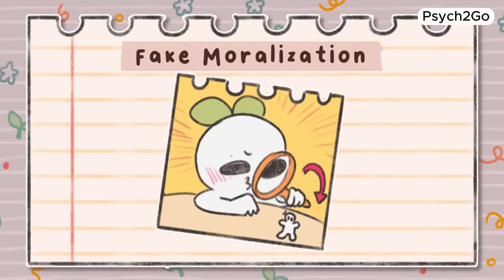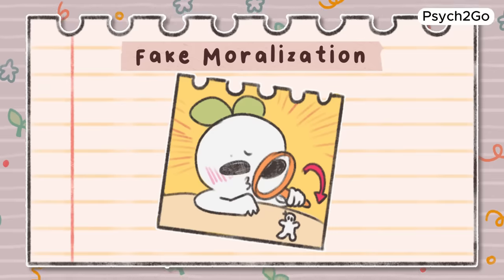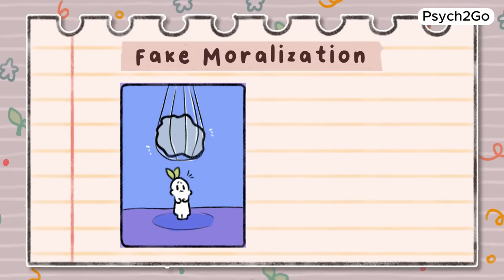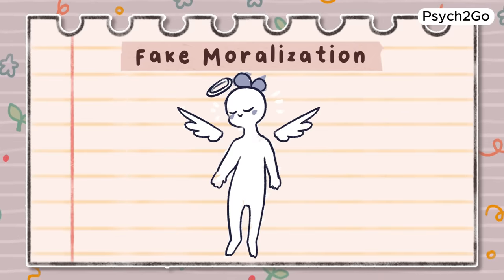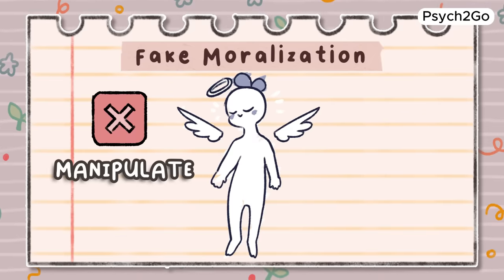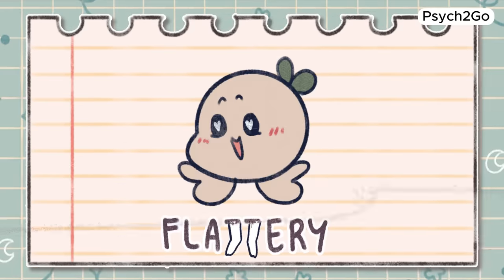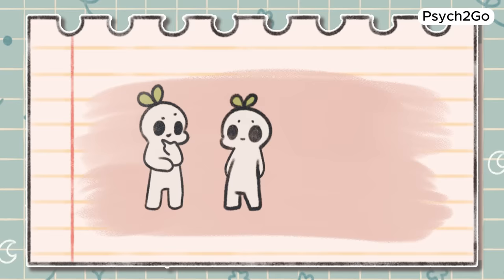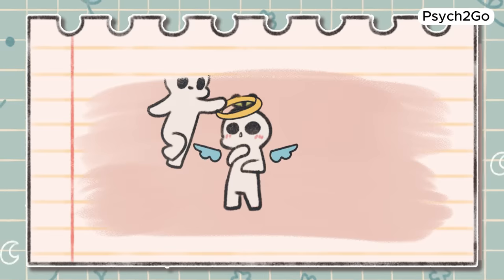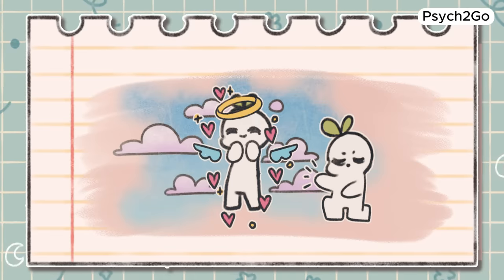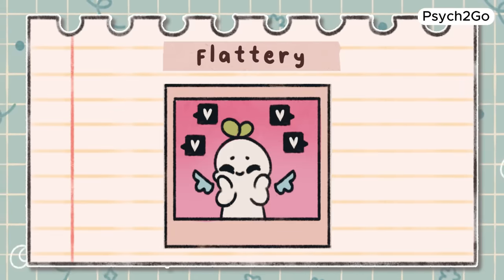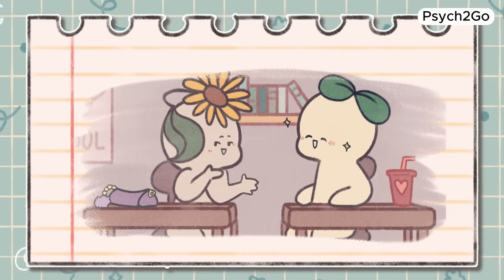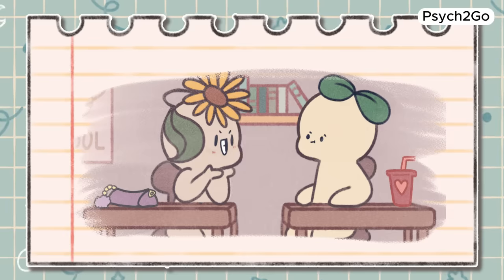Fake moralization can be an especially difficult tactic to detect, since some people are genuinely oppressed or want to call out harmful behavior, so it can be difficult to tell whether they're trying to manipulate or be helpful. Flattery. Sometimes manipulators will try to win you over using flattery — for example, saying 'You're smart, so I'm sure you would agree with me.'